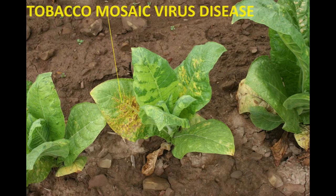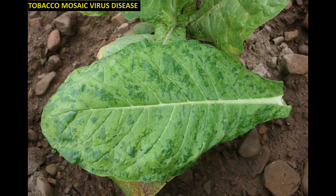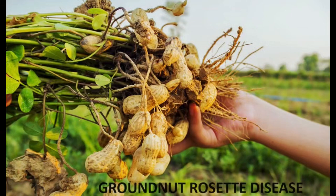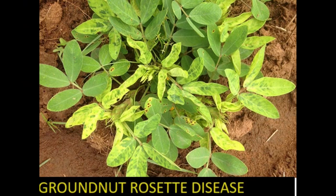Groundnut Rosette Disease is caused by a complex of three agents. The affected crop is groundnut. Infected plants show rosette-like symptoms with yellowing, reddening, and distortion of leaves. The disease can lead to severe yield losses in groundnut-producing regions.